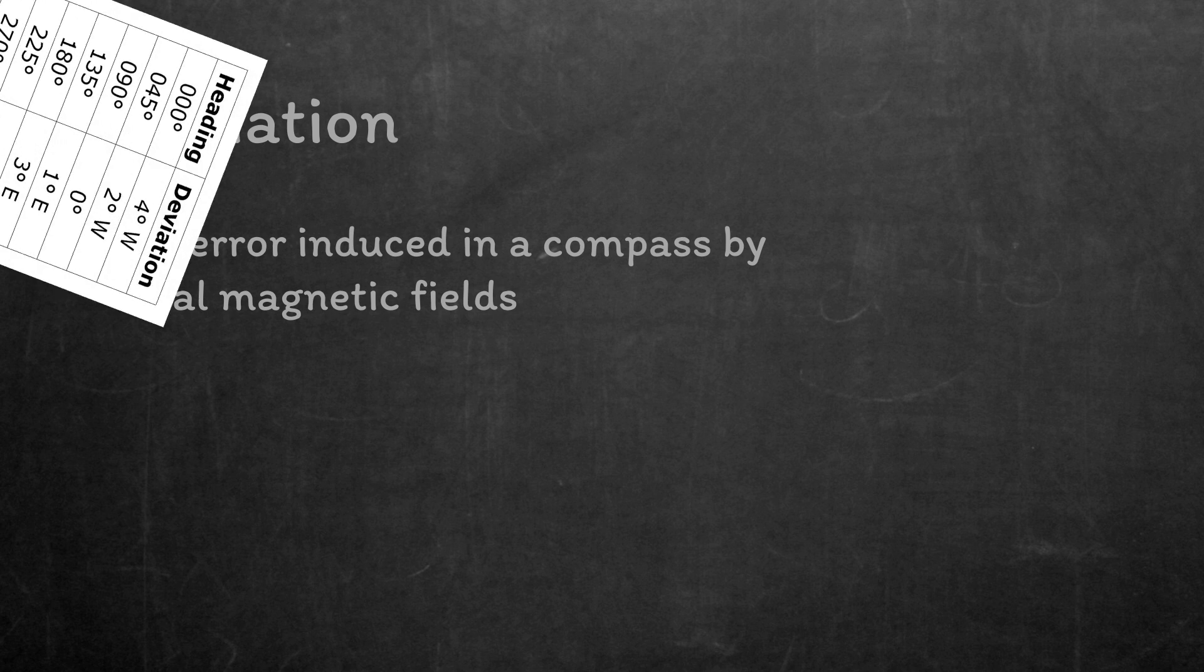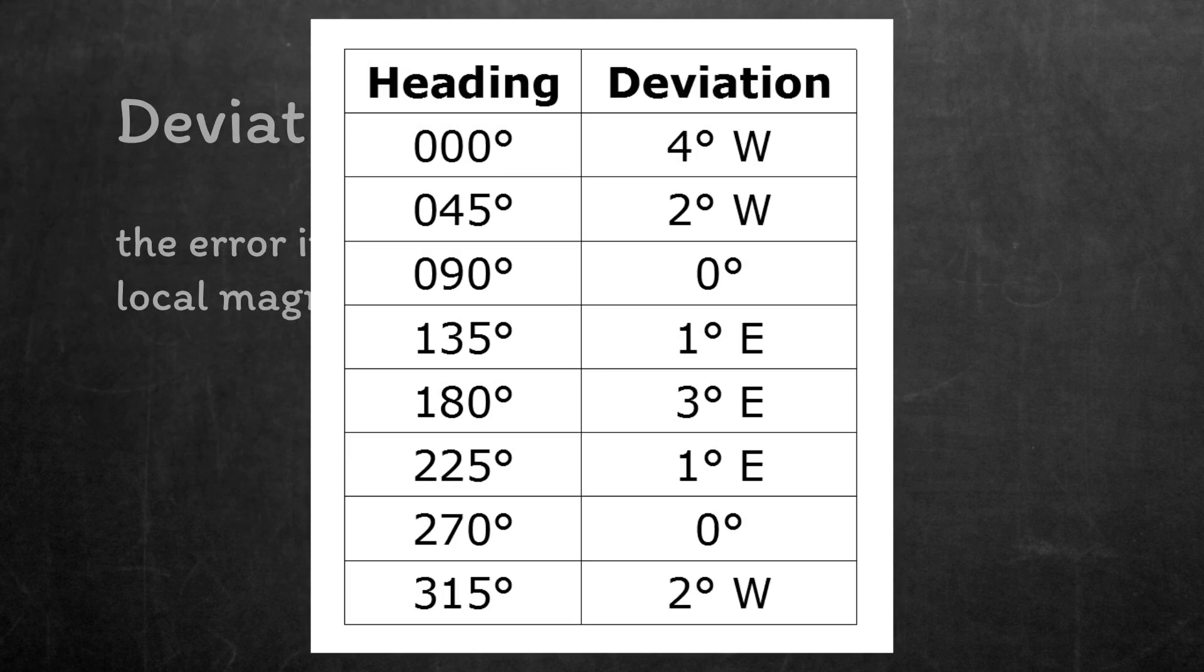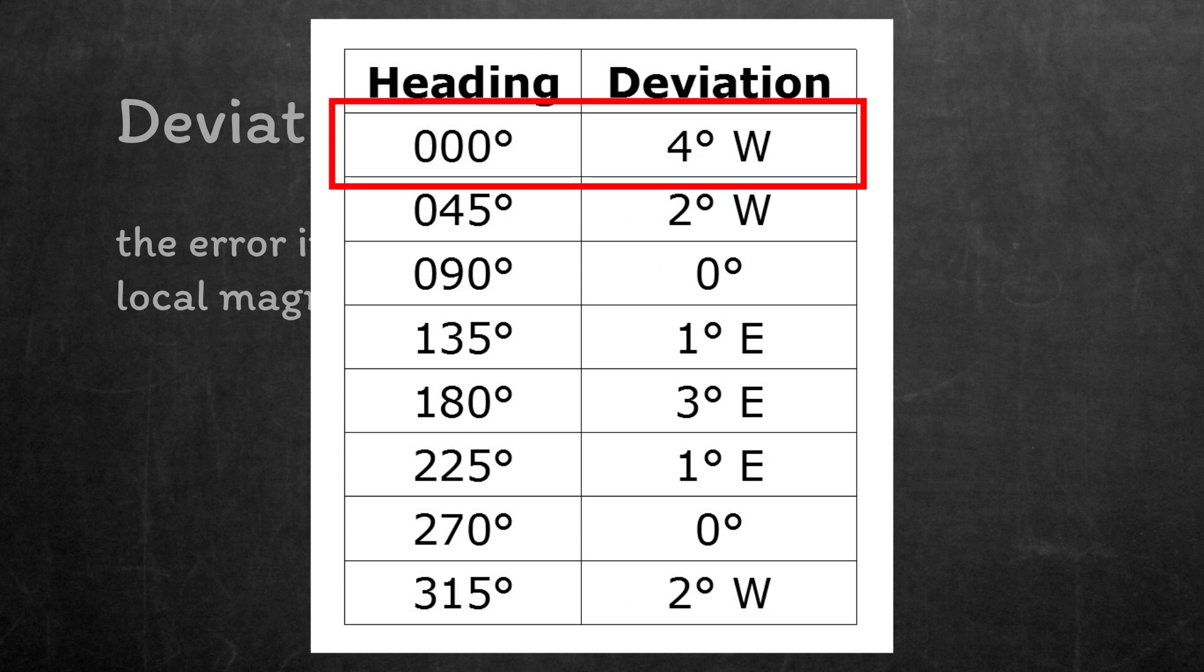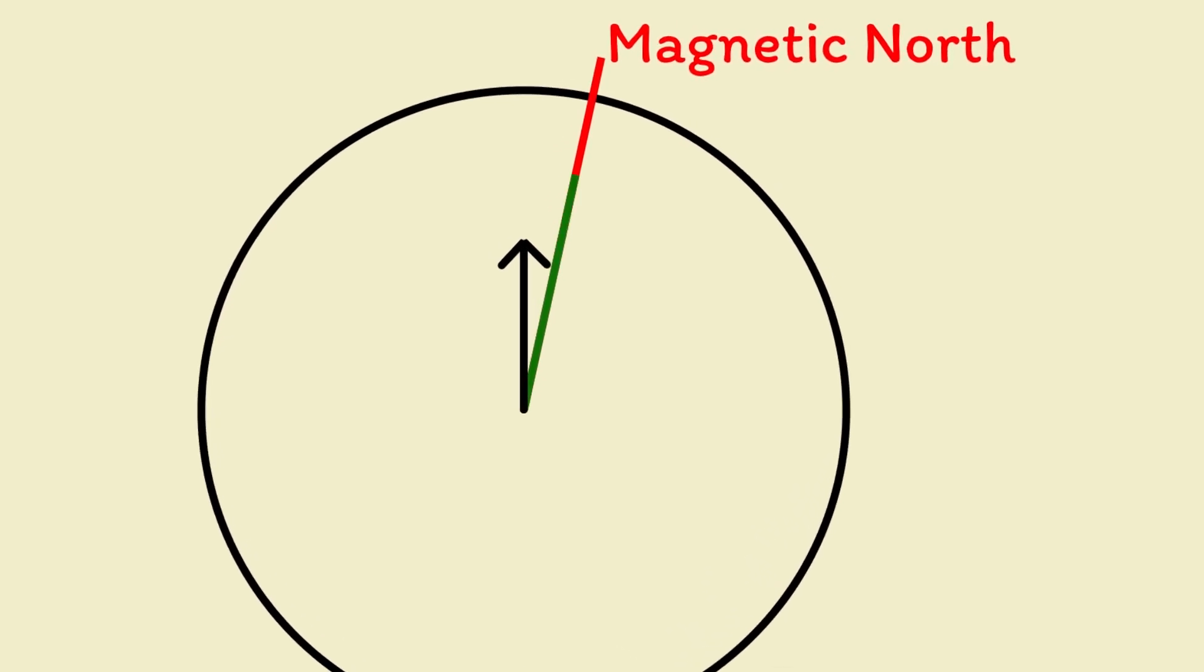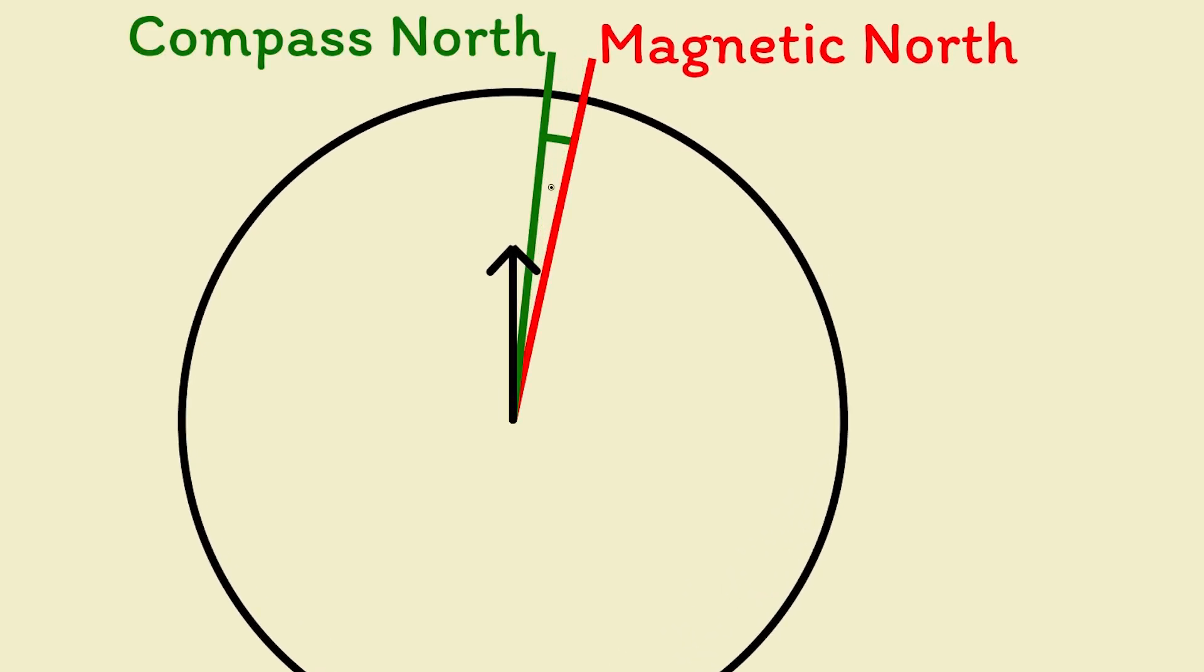We call this deflection deviation, and it changes depending on the ship's heading. You can find its value from the ship's compass card, which was provided by the compass adjuster when they adjusted the compass itself. We're going to use this example deviation card today. If the ship is heading north, the deviation is 4 degrees west. Now, deviation uses the same concept as variation. It describes the difference between magnetic north and compass north. We think of it as the compass north pole is 4 degrees west of the magnetic north pole.